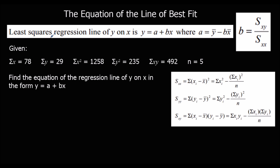The least squares regression line of y on x is y equals a plus bx. This is similar to y equals mx plus c, so b is the gradient and a is the y-intercept. So y equals a plus bx, where a is ȳ minus b times x̄, and b is given by Sxy over Sxx.